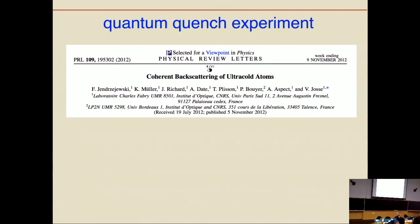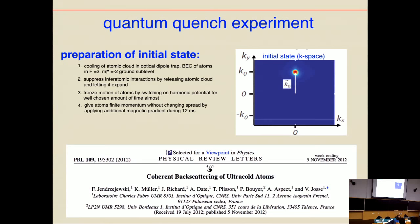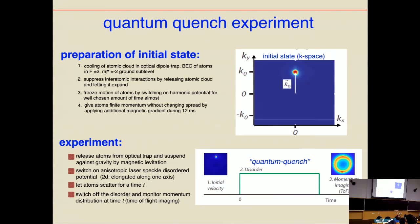Let me start with the quantum quench experiment done a couple of years ago in the group of Alain Aspect. They trapped cold atoms in an optical trap. They prepared a cloud of cold atoms with a well-defined initial momentum k₀, then released them from the optical trap, suspended against gravity by magnetic levitation, and switched on a laser speckle disorder potential mimicking two-dimensional disorder, elongated along one axis. They let this cloud evolve with initial momentum k₀ for some time t in the disorder speckle, then switched off the disorder and took a snapshot of the momentum distribution.